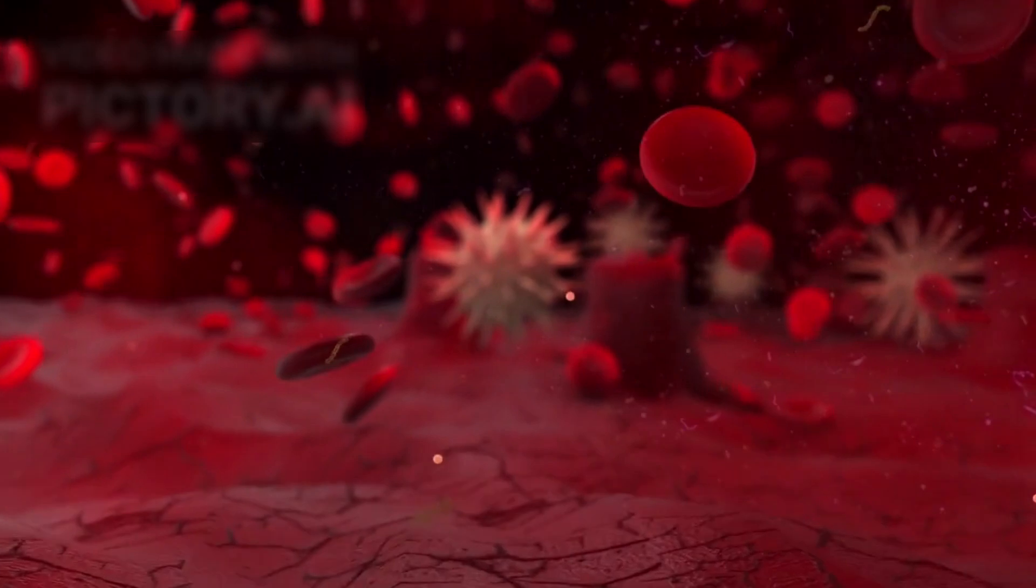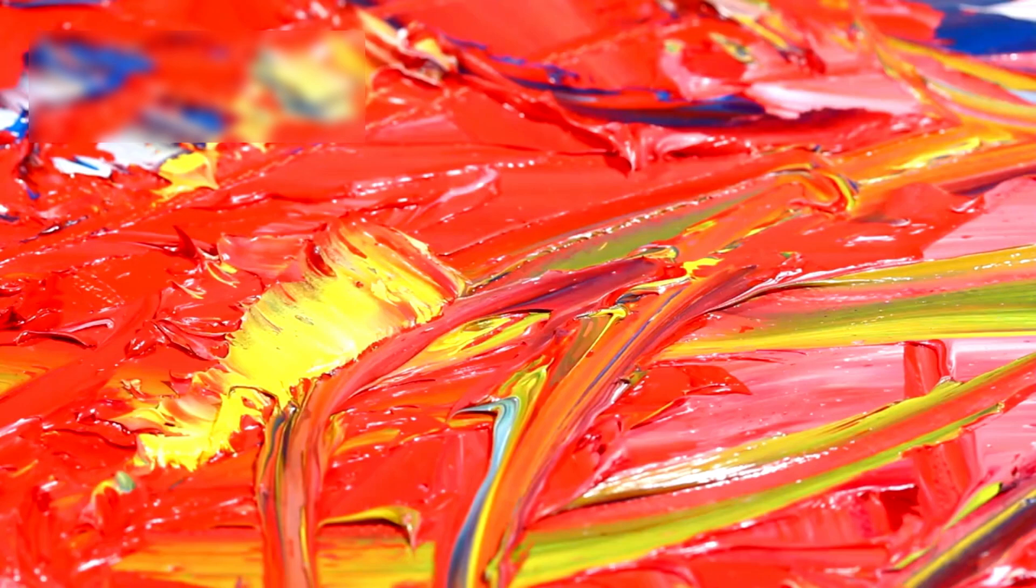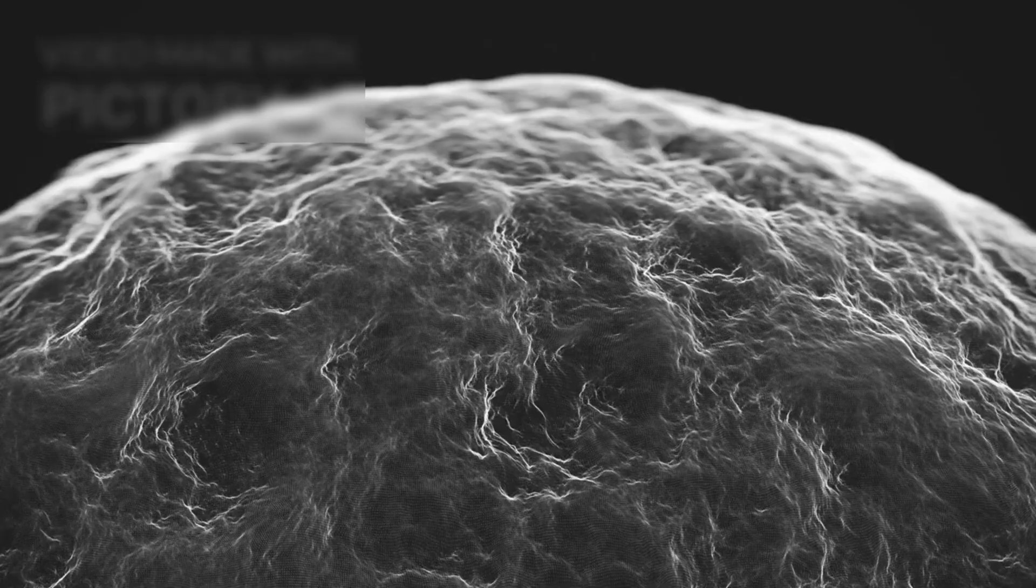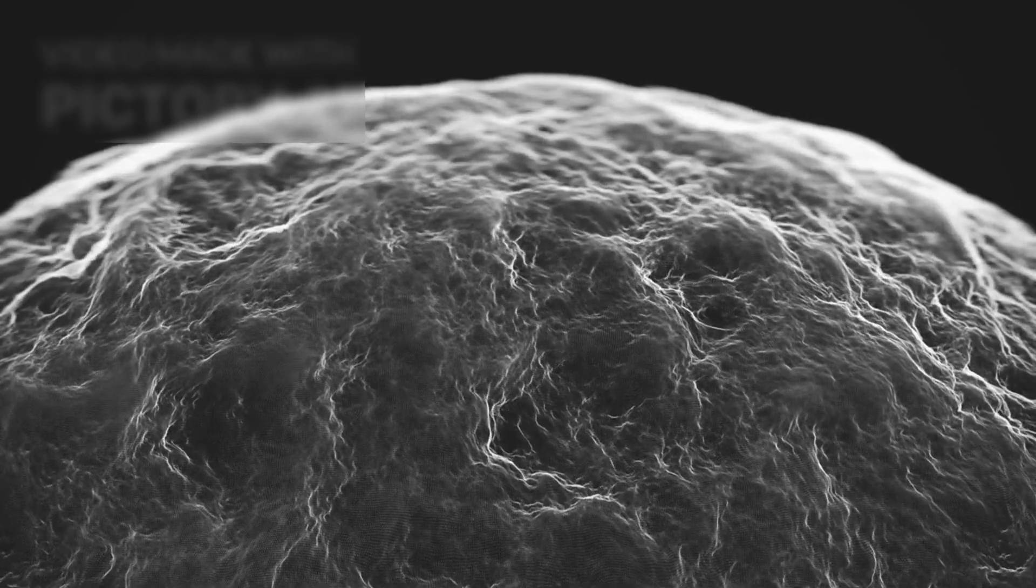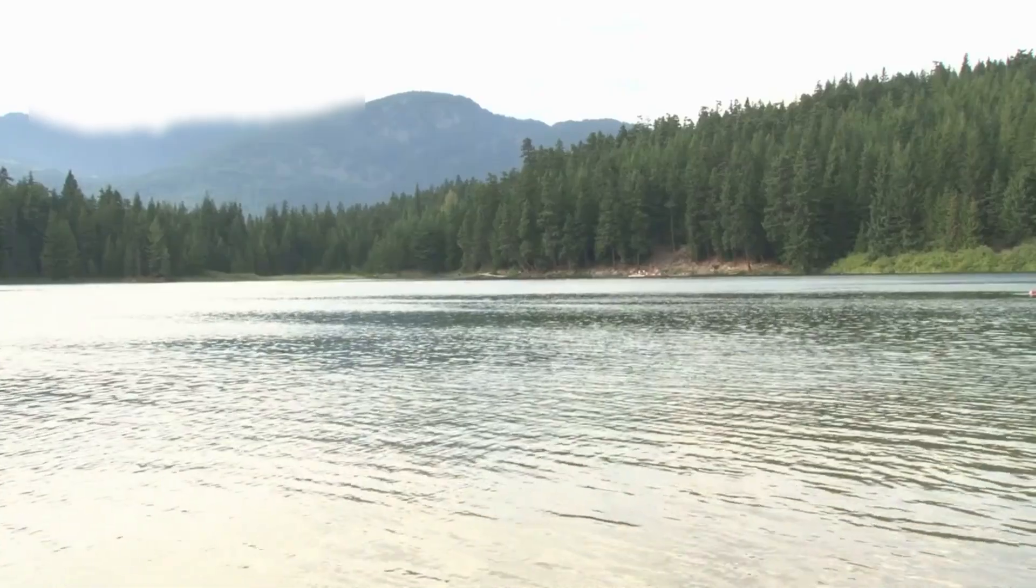The enhanced image, now viral in secret circles, shows more than just a shape. It reveals symmetry. Design. Three radial arms, a central core. Surface striations, like panels. Too precise to be random. Too quiet to be human.